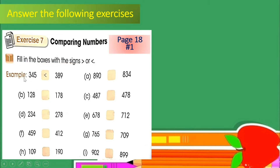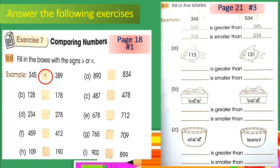On the first example, we have 345 is smaller than 389. I want you to do the same — look at the numbers, especially the first number, and see if it is greater than or smaller than the second number. For the second activity, go to page 21 of your workbook and look for number 3.